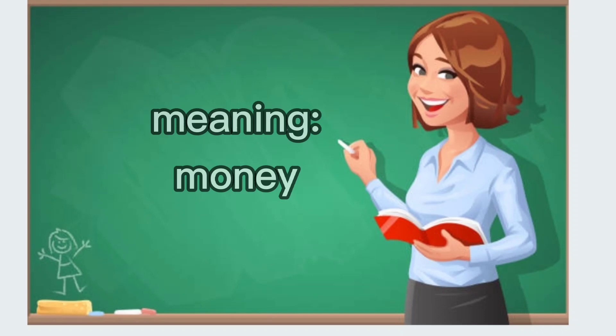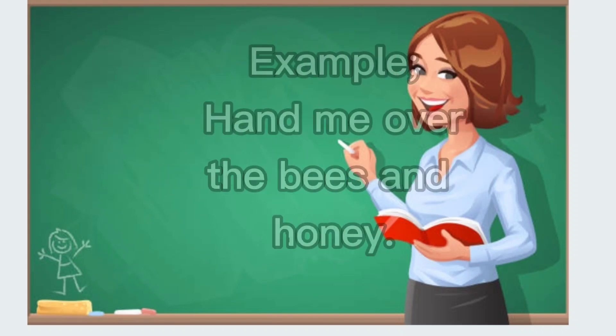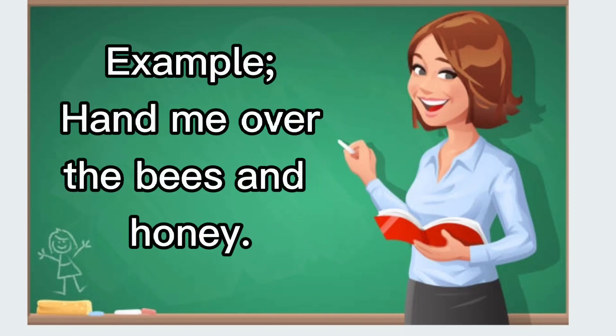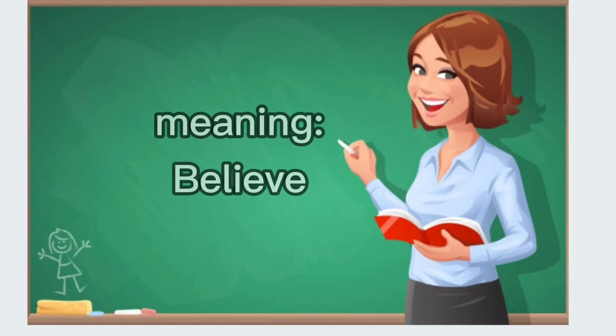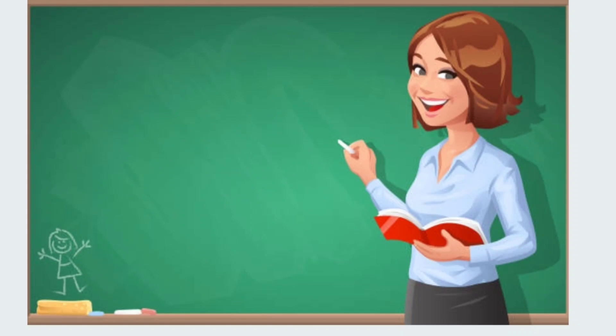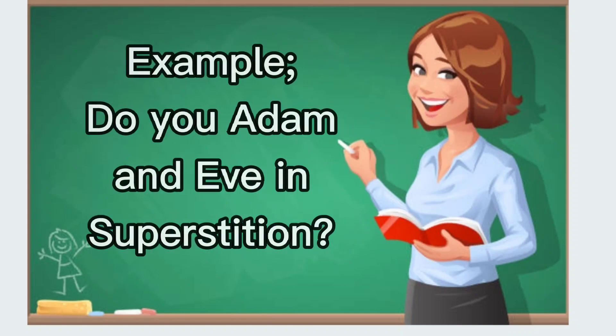Example: hand me over these and honey. Three: Adam and Eve, meaning believe. Example: do you Adam and Eve in superstition?